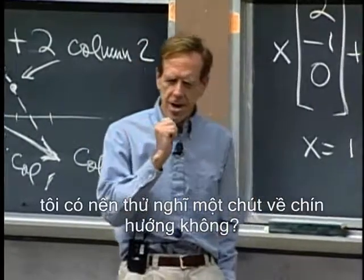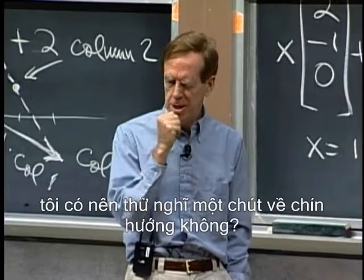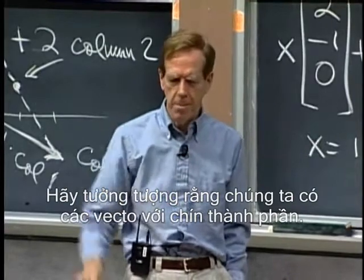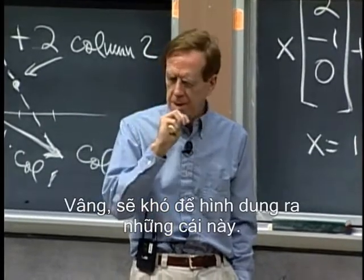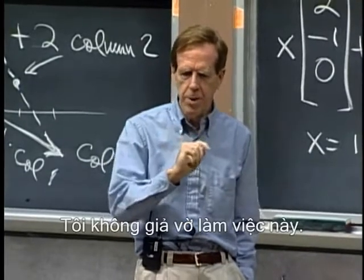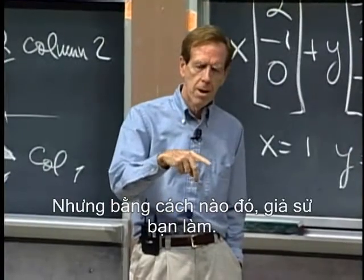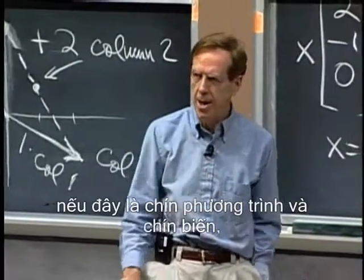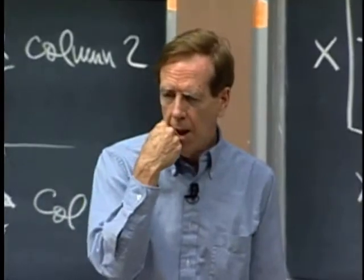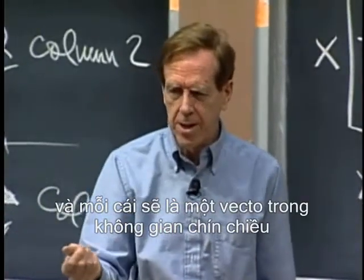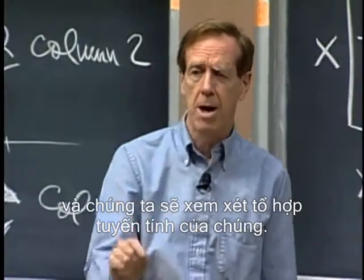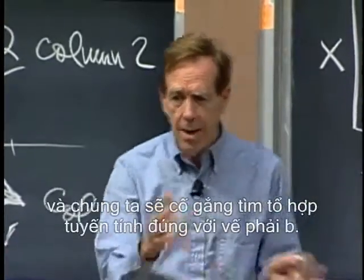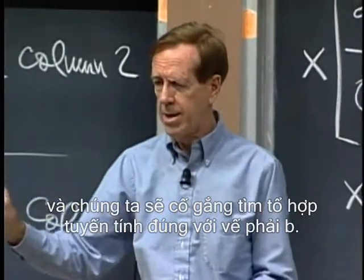Should we take just a little shot at thinking about nine dimensions? Imagine that we have vectors with nine components — it's going to be hard to visualize those. But if this were nine equations in nine unknowns, then we would have nine columns and each one would be a vector in nine-dimensional space, and we would be looking at their linear combinations.